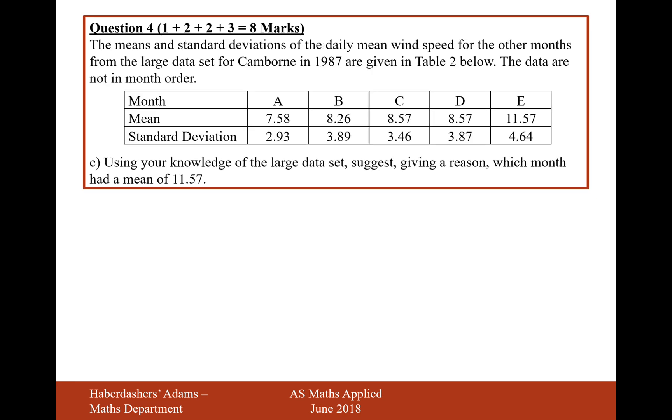Moving on to part C. The means and standard deviations of the daily mean wind speed for the other months from the large data set for Camborne in 1987 are given in table 2 below. So the data are, the data is not in month order. So we have month A, month B, month C, month D, and month E. Using your knowledge of the large data set suggests giving a reason which month had a mean of 11.57.